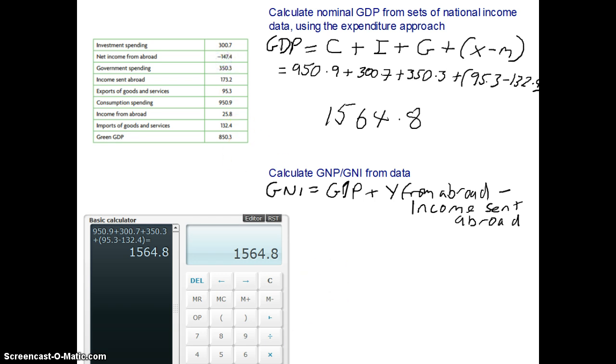So again, another way of writing this is GNI equals GDP plus net income from abroad.